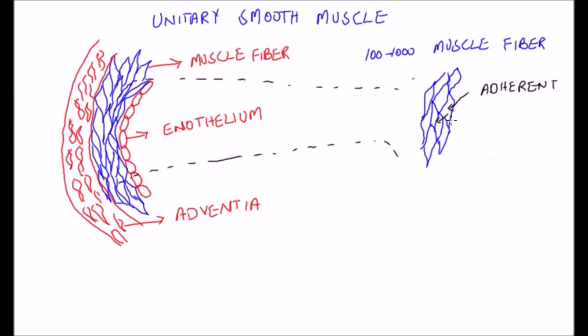In addition, cell membranes are joined by many gap junctions through which ions can flow freely from one muscle to the next so that action potentials can travel from one fiber to the next. This type of smooth muscle is also called syncytial smooth muscle.